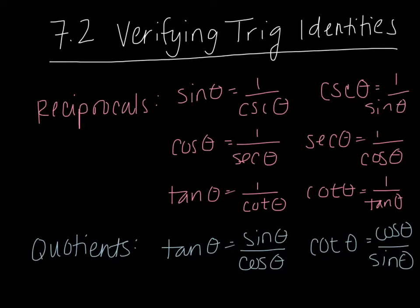We have our quotient identities, which is tangent equals sine over cosine, and cotangent equals cosine over sine, which come from our unit circle. Those are ones you also need to have memorized, so start writing those down as well.